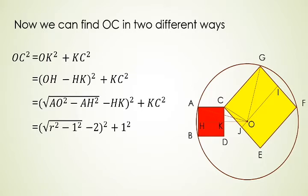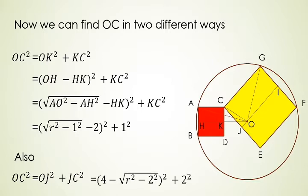Now we will find OC square with the help of this yellow square in the similar way. Here the triangle OC square is equal to OJ square plus JC square. And with the help of same substitutions we get OC square is equal to 4 minus under root R square minus 2 square whole square plus 2 square. Here we get two values of OC and these must be equal to each other.